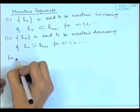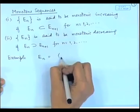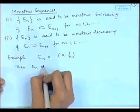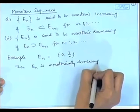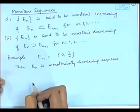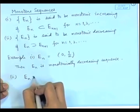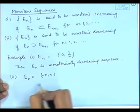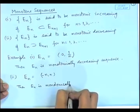Let us consider some examples here. Let E_n be the interval 0 to 1/n; then E_n is a monotonically decreasing sequence. Further, we can consider the sequence E_n equal to the interval minus n to n; then E_n is monotonically increasing.